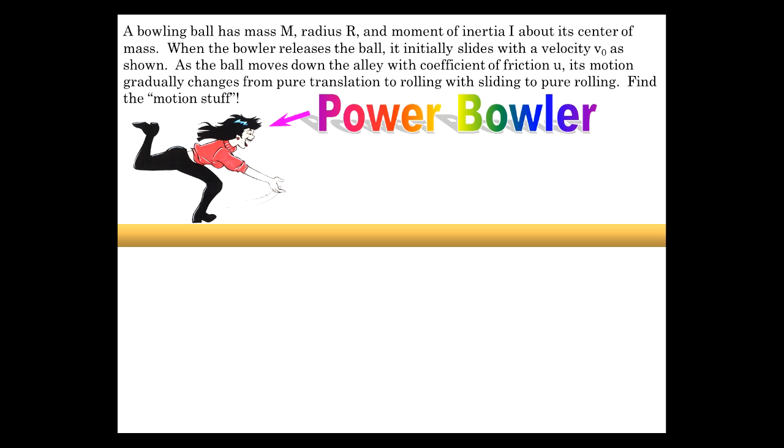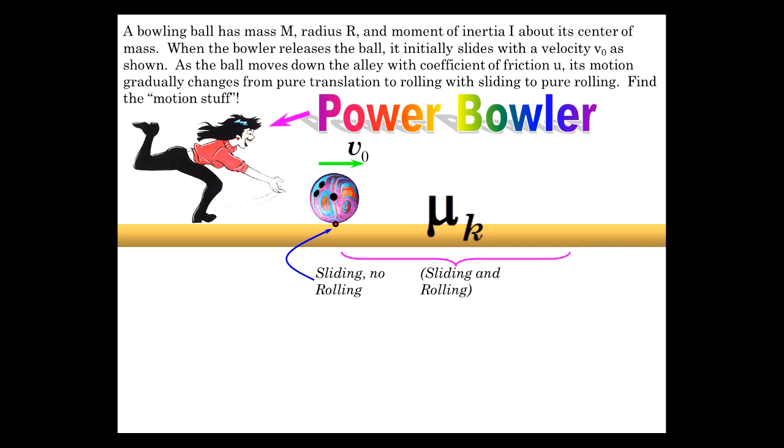And so, let's consider some of these details. First of all, when she releases the bowling ball, it's moving at V0, initially sliding without any rolling. Therefore, that little point of contact has a motion, the ball's motion with respect to the floor at the point of contact is V0. There is no rolling.